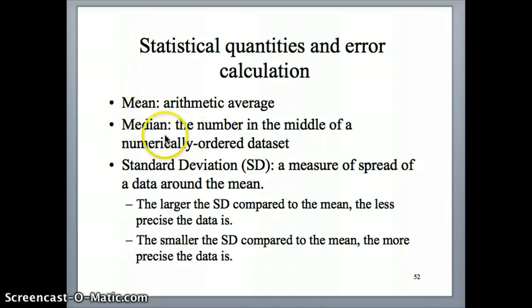Medians are useful if you're talking about data sets that have huge what we call outliers, which are basically numbers that would skew the distribution to a really large or really small. A typical example would be if you're talking about median house prices, for example, in the Los Angeles area.